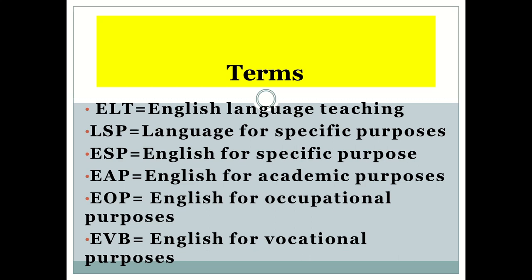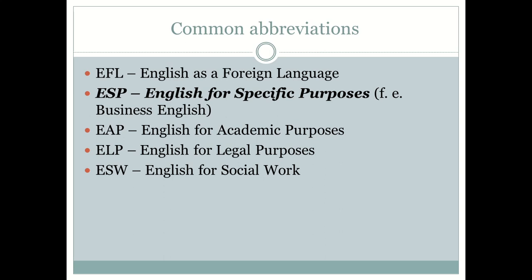The first abbreviation is ELT — English Language Teaching. LSP — Language for Specific Purposes. ESP — English for Specific Purposes. EAP — English for Academic Purposes. EOP — English for Occupational Purposes. EVP — English for Vocational Purposes. EFL — English as a Foreign Language. These are common abbreviations which will be used in these slides, assignments, and books relevant to ESP teaching and learning.